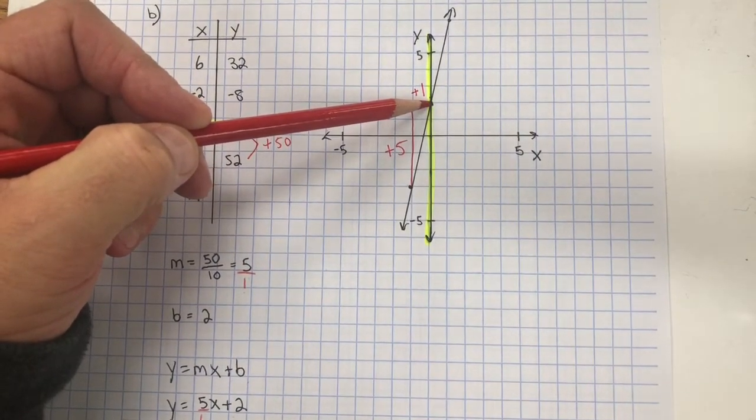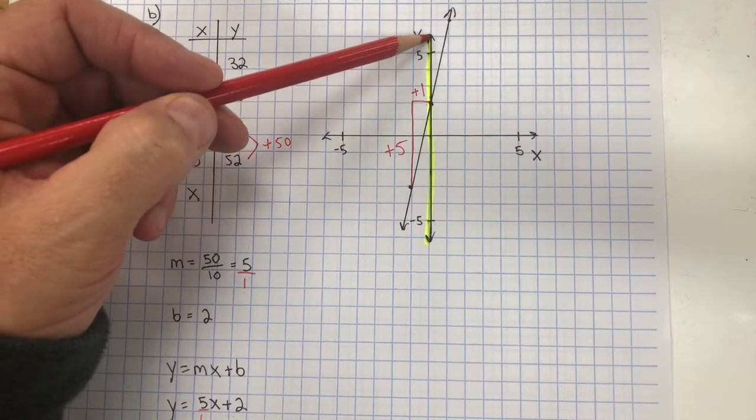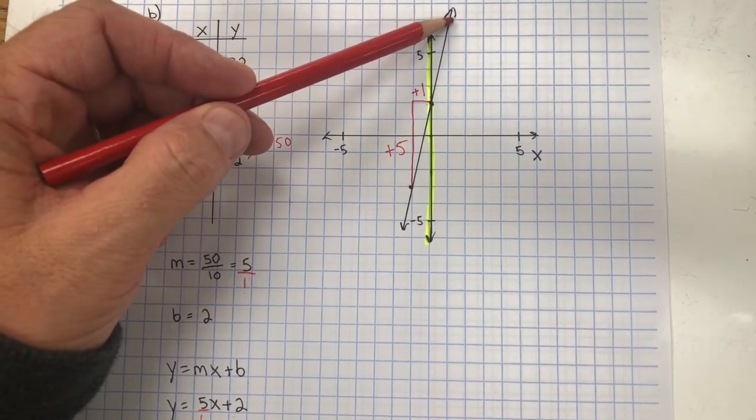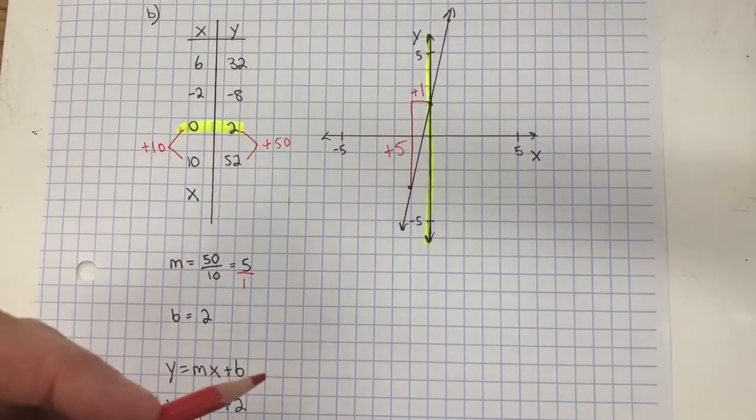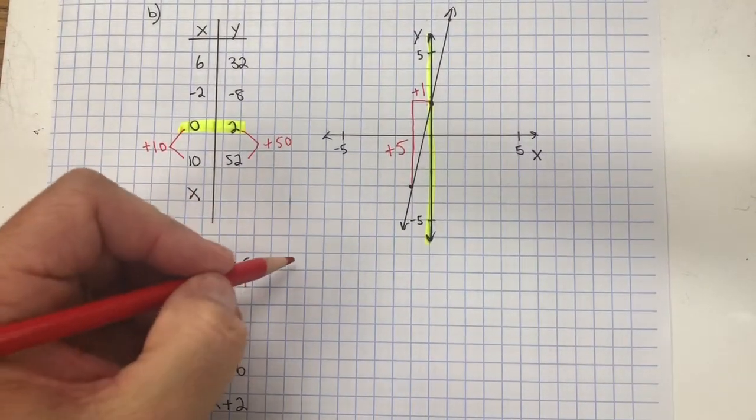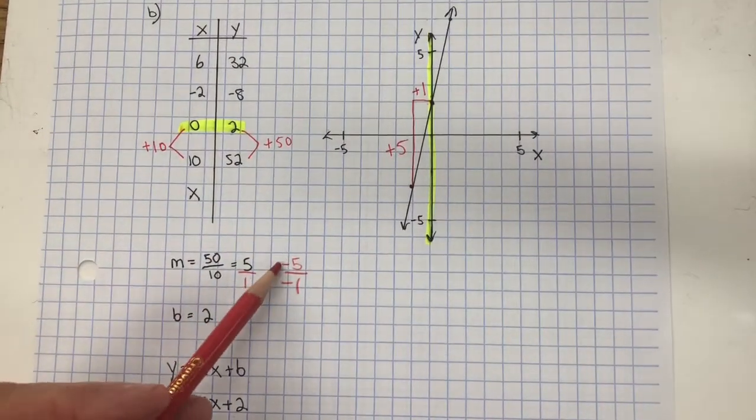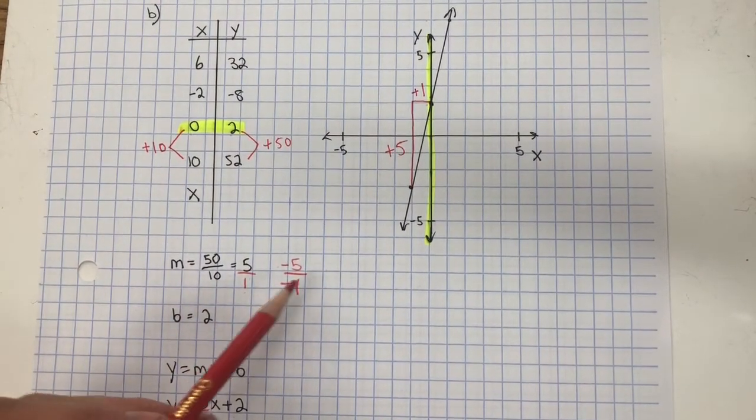From there, our starting point, we can go up 5: 1, 2, 3, 4, 5, and over positive 1.